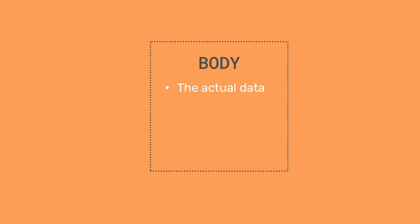The body is the actual chunk of data being transmitted — the other two sections are like its metadata, if you prefer. The footer usually contains some data to do with security or error prevention or correction. It might contain a hash total, which we will cover in the security video.